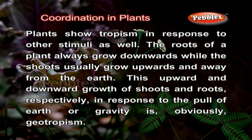Plants show tropism in response to other stimuli as well. The roots of a plant always grow downwards while the shoots usually grow upwards and away from the earth. This upward and downward growth of shoots and roots respectively, in response to the pull of the earth or gravity, is obviously geotropism.